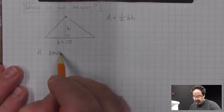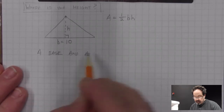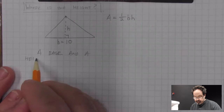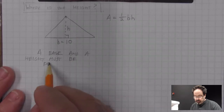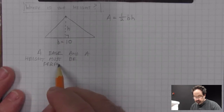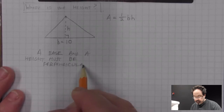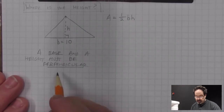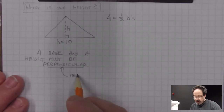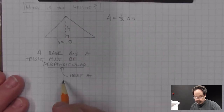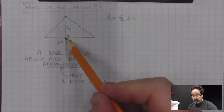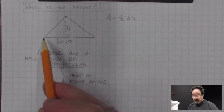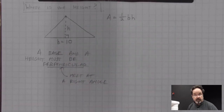A base and a height must be perpendicular. And perpendicular means that they meet at a right angle. And where they meet can also be said where they intersect. This point right here is the point where the height and the base meet, and they create a right angle. So they're perpendicular.